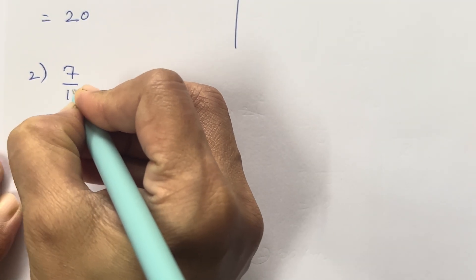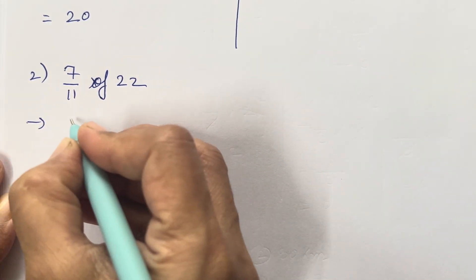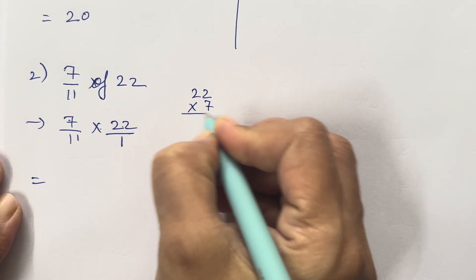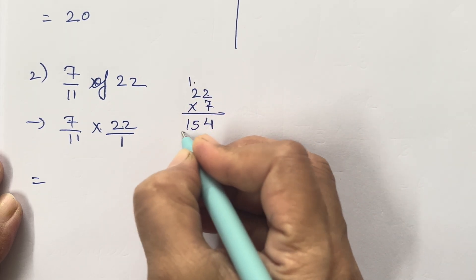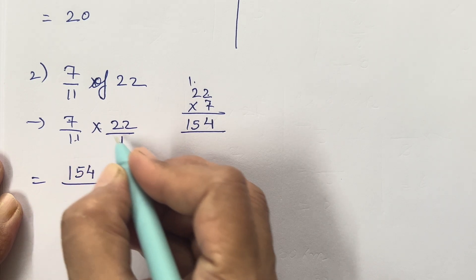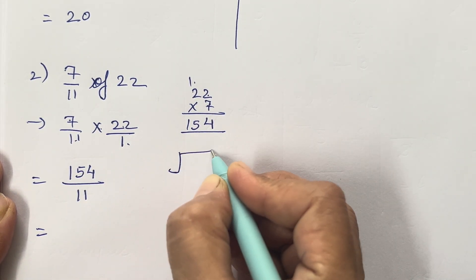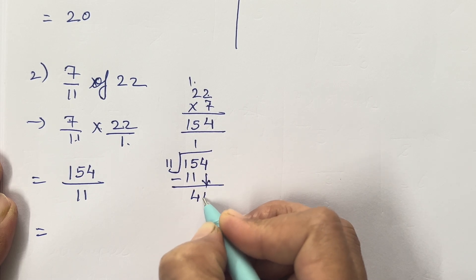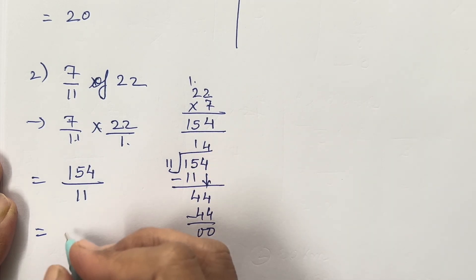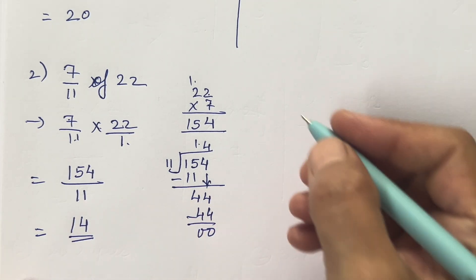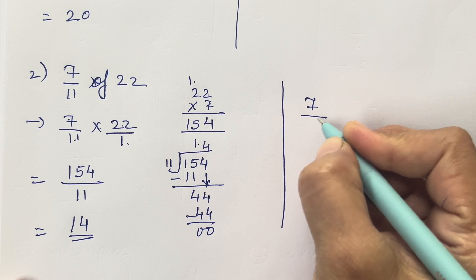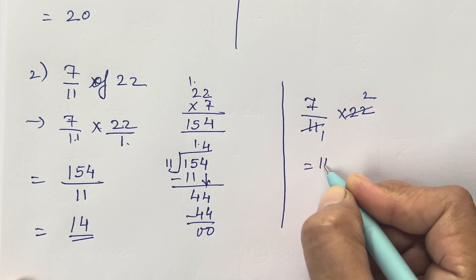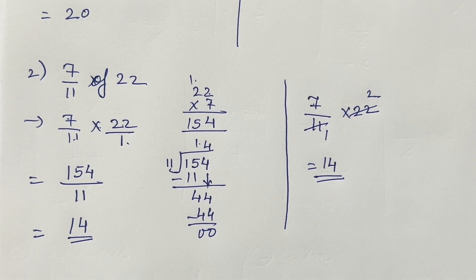Second sum: 7/11 of 22. Write it in multiplication form: 7/11 multiplied with 22. So 22 into 7 is 154, and 11 into 1 is 11. Divide 154 by 11: 11 ones are 11, 11 fours are 44 — answer is 14. Using the shortcut: 11 ones are 11, 11 twos are 22 — so 7 into 2 is 14. In seconds you have your answer.